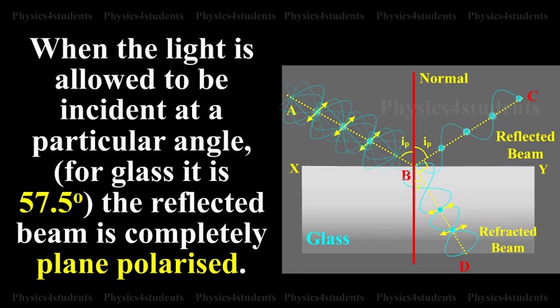When the light is allowed to be incident at a particular angle, for glass it is 57.5 degrees, the reflected beam is completely plane polarized.